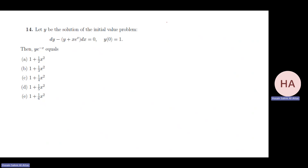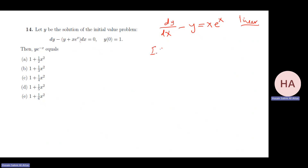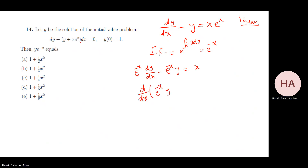This next problem is linear. We have dy/dx, and dividing gives dy/dx minus y = x·eˣ (rearranging the terms). The integrating factor is e^(∫-1 dx) = e^(-x). Multiplying through: e^(-x) dy/dx minus e^(-x)·y = x. This should be in the format d/dx[e^(-x)·y] = x. Check — yes, correct. Integrating: e^(-x)·y = x²/2 + C.